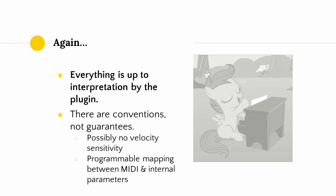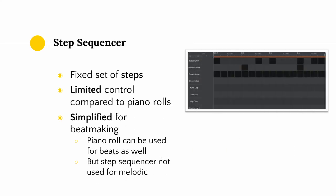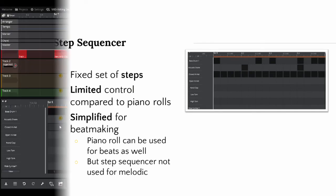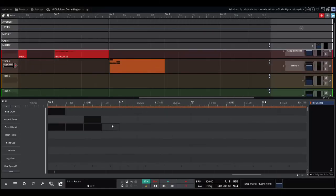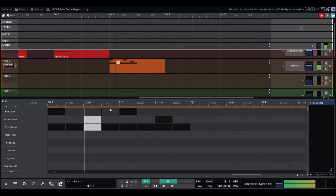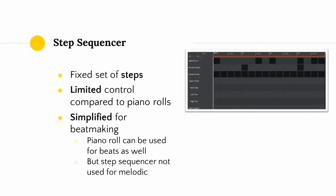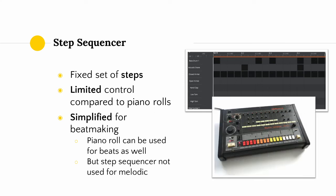Now that we've touched on other potential MIDI parameters, let's talk about the step sequencer. A step sequencer offers a fixed set of steps where you can merely specify whether a note is being played or not. Some step sequencers also allow you to control the velocity of each step. Step sequencers typically offer much more limited control over MIDI parameters than piano rolls.